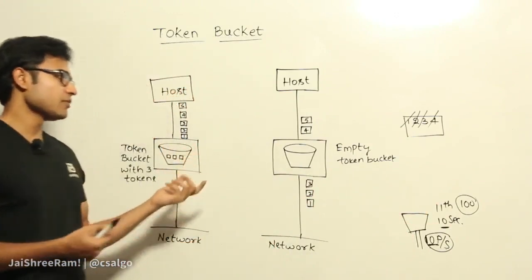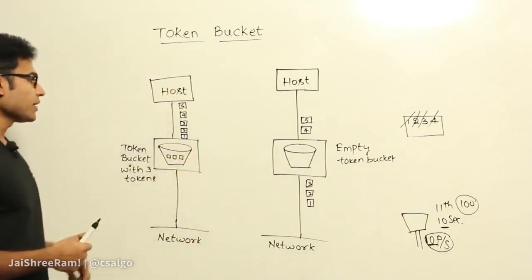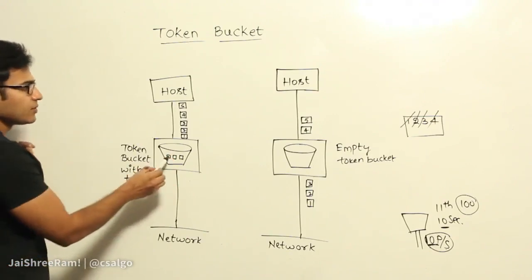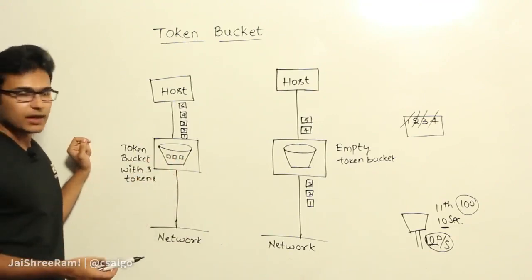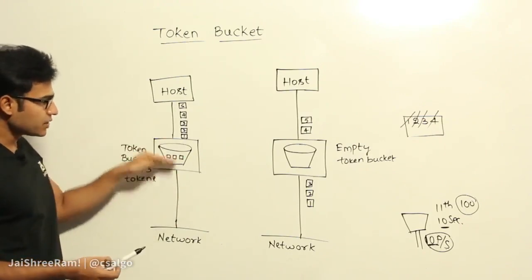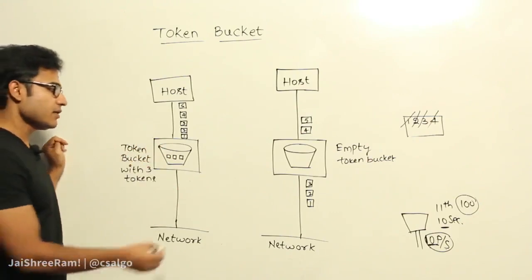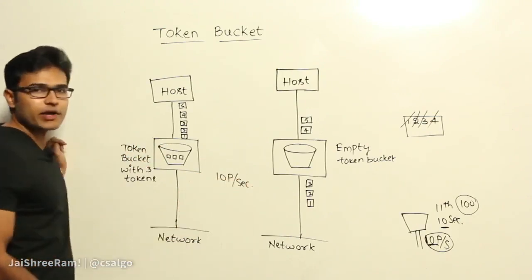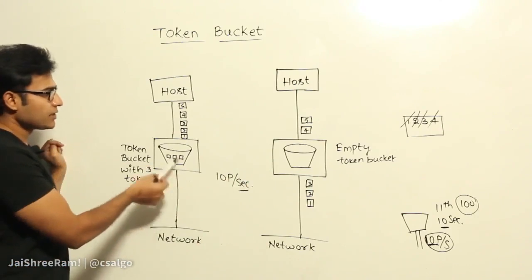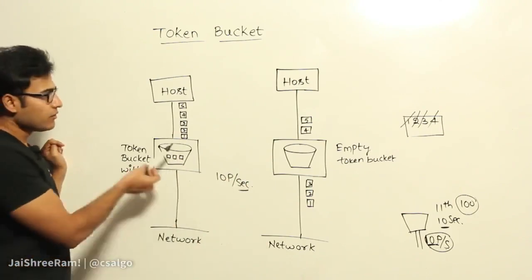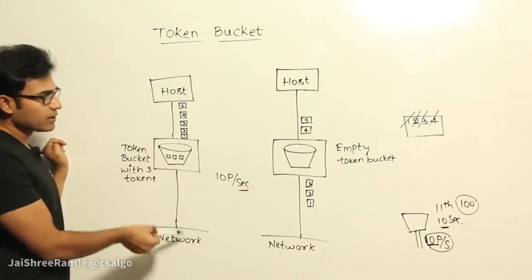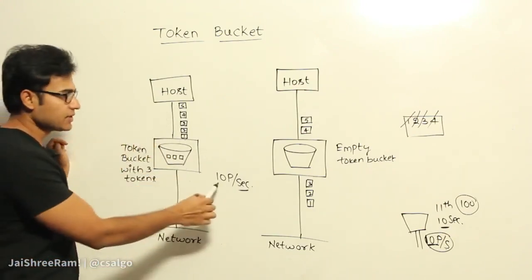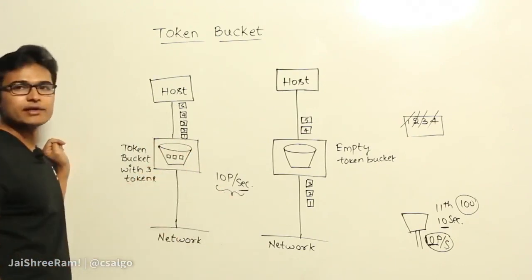Now coming to the token bucket — in the token bucket, at every clock tick or at equal intervals of time, tokens are added to the bucket. Tokens are added at the rate at which the user is allowed to send data. For example, if the user is allowed to send 10 packets per second, then every 1 second 10 tokens are added. Now if a packet has to go out, it has to take a token. If the sender didn't send packets at all, the unused tokens will still be lying inside the bucket.